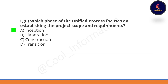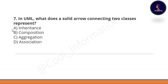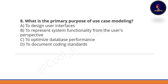Next question: which phase of the unified process focused on establishing the project scope and requirements? Options are inception, elaboration, construction, or transition. Option A — inception — is correct. Next question: in UML, what does a solid arrow connecting two classes represent? A solid arrow in UML represents association. Option D is correct.